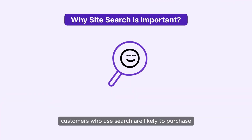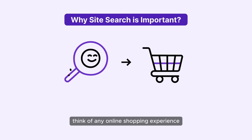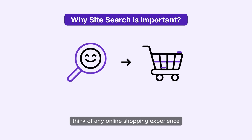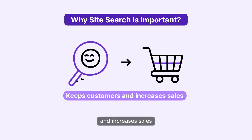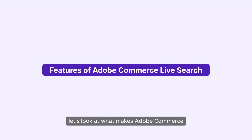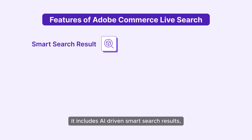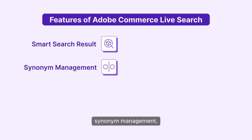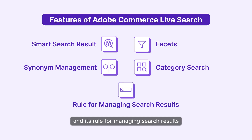Customers who use search are more likely to purchase. Think of any online shopping experience — it's a good search function that keeps customers engaged and increases sales. What makes Adobe Commerce Live Search stand out? It includes AI-driven smart search results, synonym management, facets, category search, and rules for managing search results.